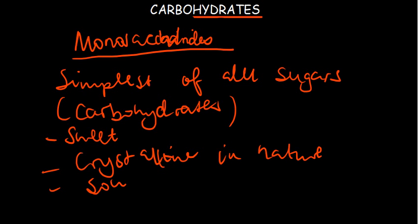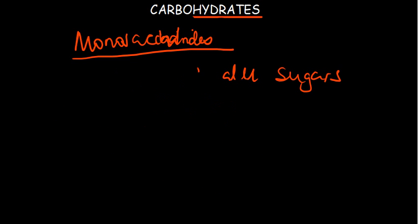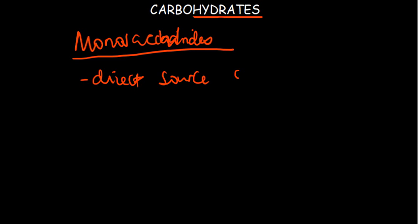Monosaccharides can be classified according to the number of carbon atoms they possess. They are used as a direct source of energy — because they are very simple, the body can easily use them to get energy. When your body needs to use glucose or these monosaccharides to get energy, it can easily do so because the molecule is very simple.